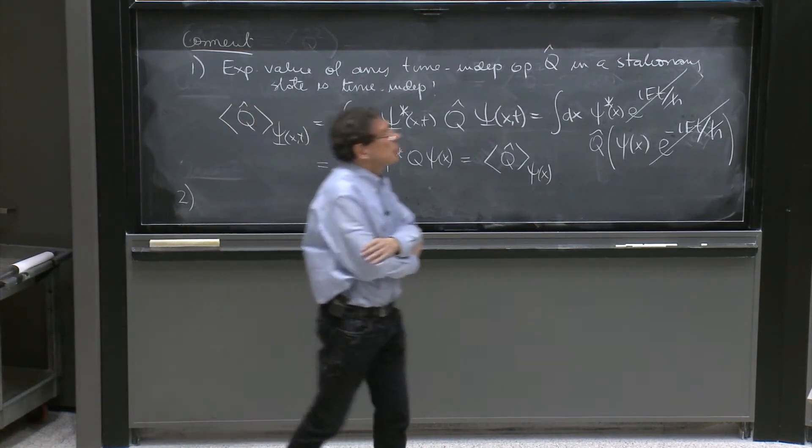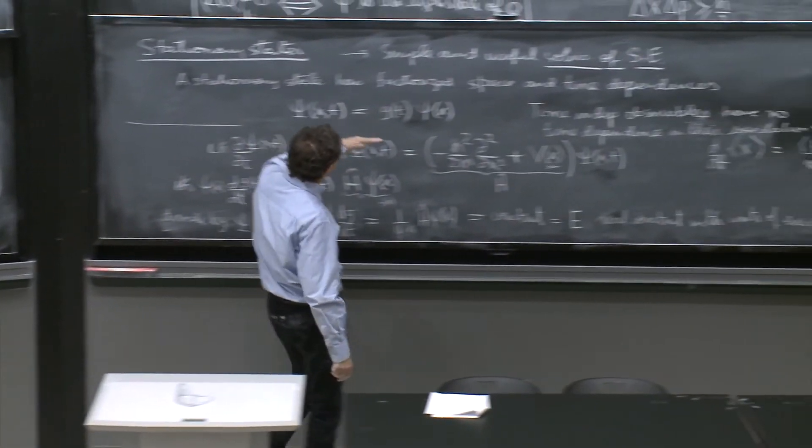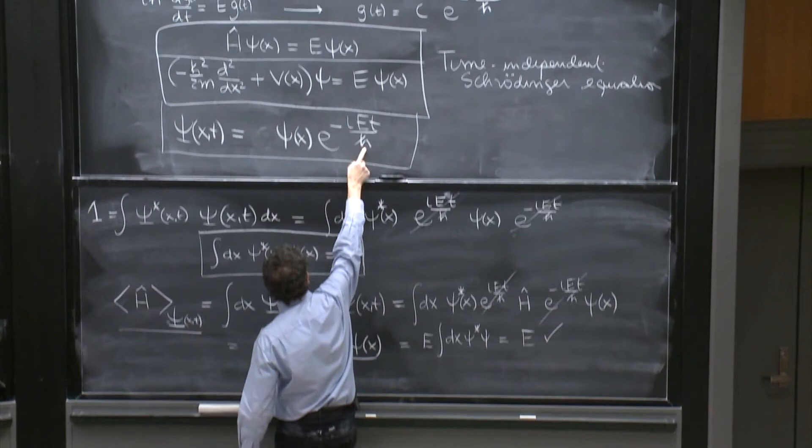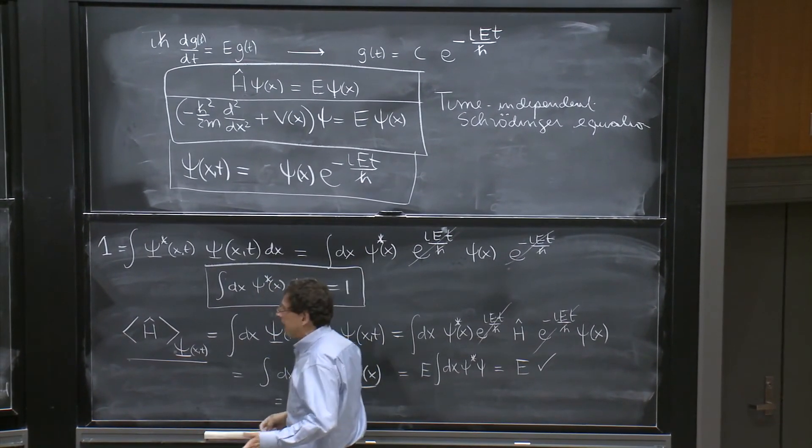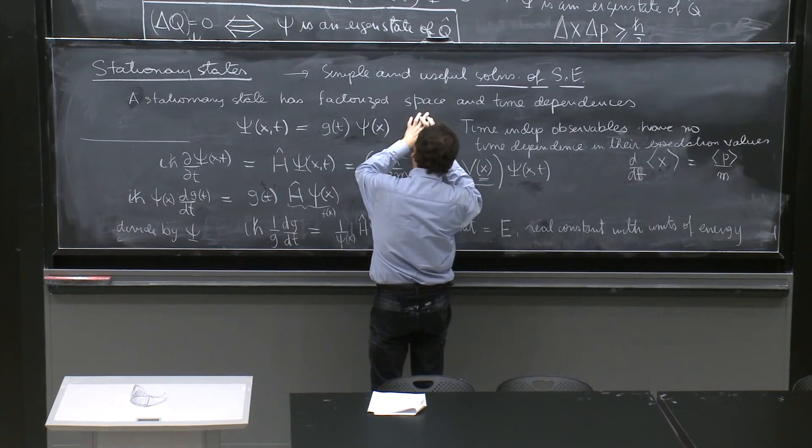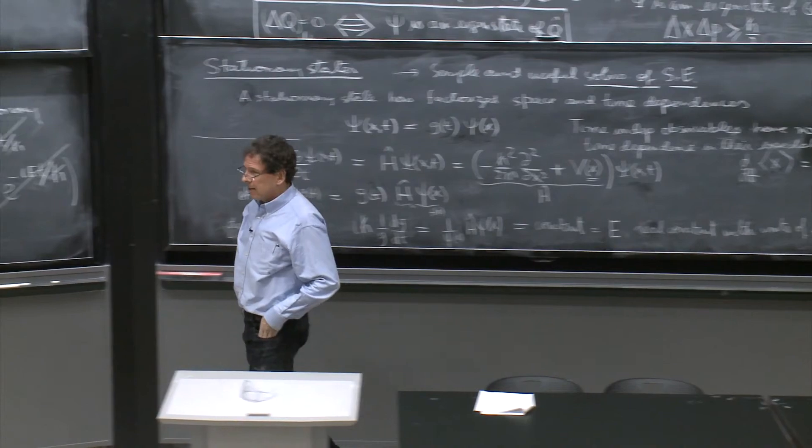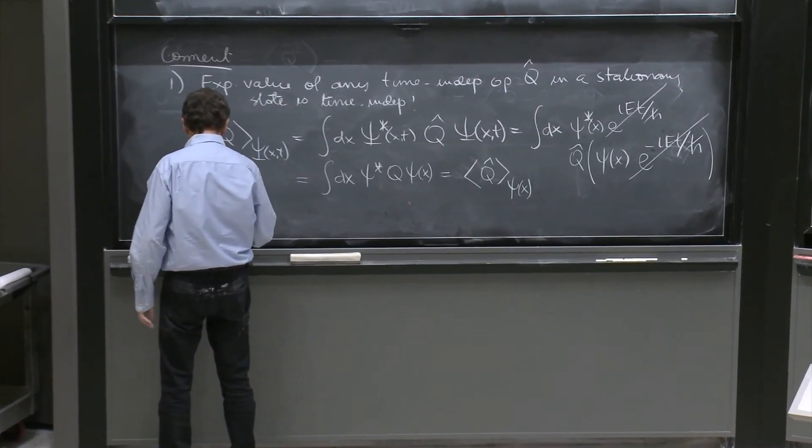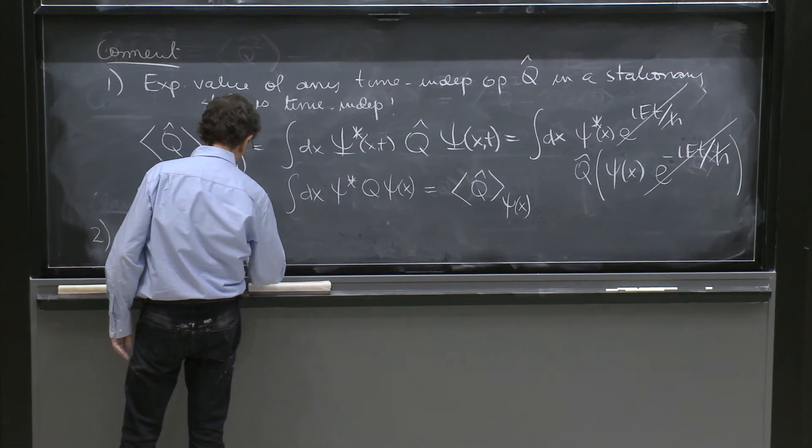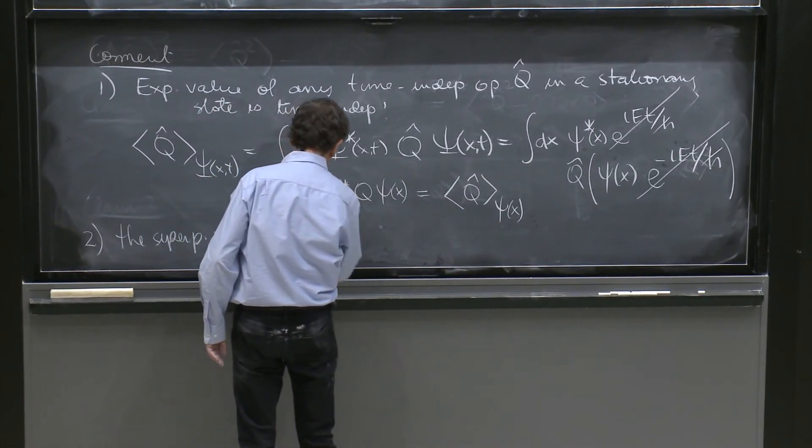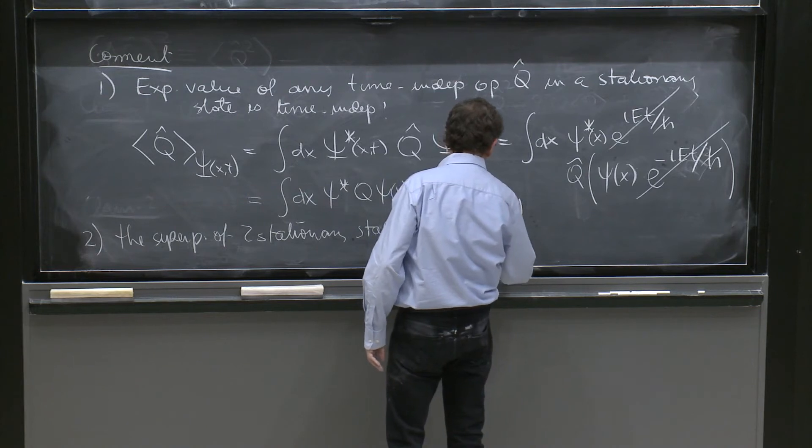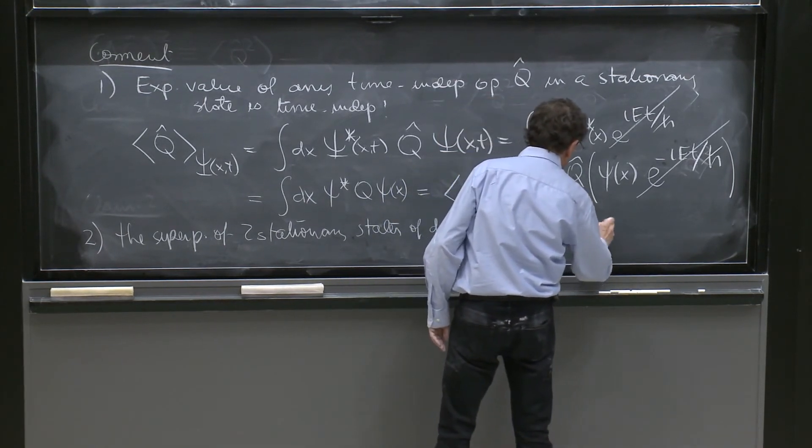It's not a stationary state in general because it's not factorized. If you have two stationary states with different energies, each one has its own exponential. And therefore, the whole state is not factorized between space and time. One time dependence has one space dependence, plus another time dependence and another space dependence. You cannot factor. So the superposition of two stationary states of different energy is not stationary.